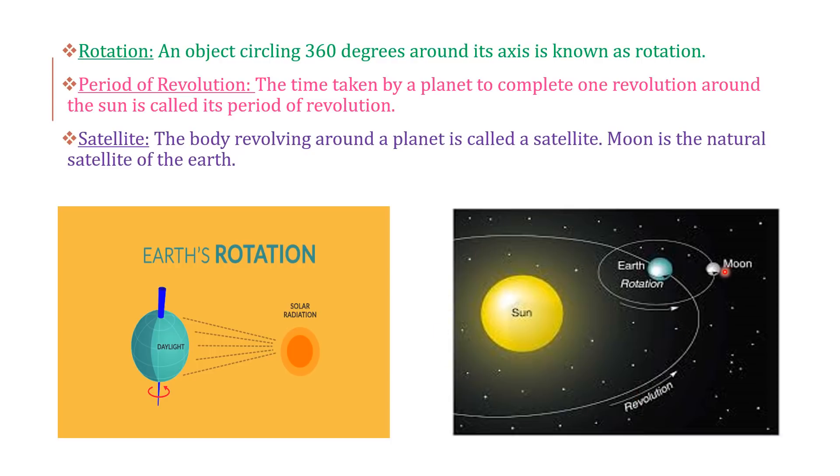Moon - moon is the satellite of the earth. The body revolving around a planet is called a satellite. Here, the moon is revolving around the earth. And it is the natural satellite of the earth.